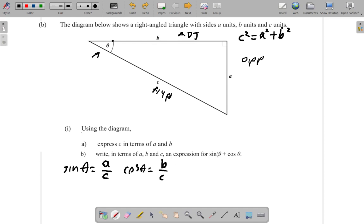So now, sine theta plus cos theta is A over C plus B over C, which you can rewrite as A plus B all over C.